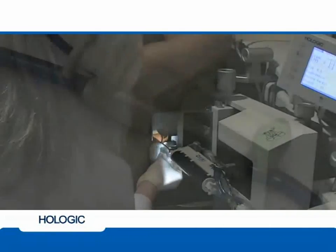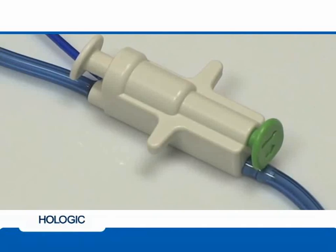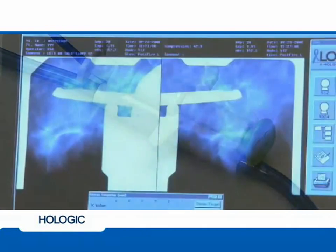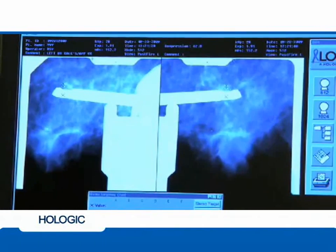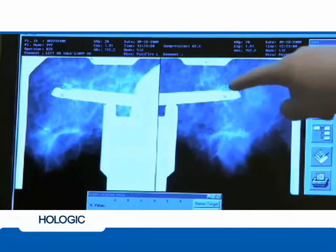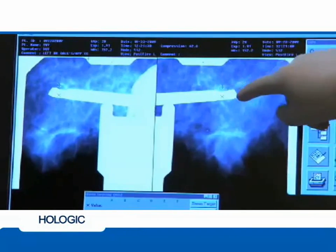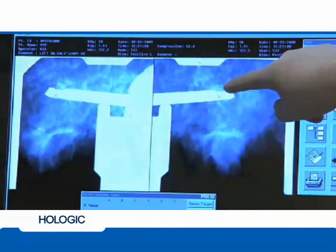The device is then fired by fully depressing the green button on the remote firing mechanism, advancing the needle to the target. The technologist takes a pair of post-fire images to ensure the center of the aperture is at the area of interest.